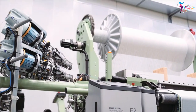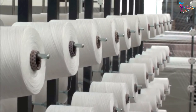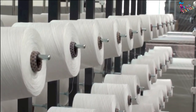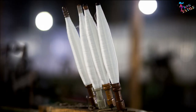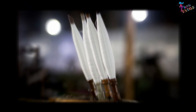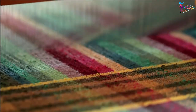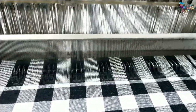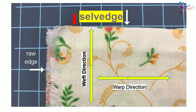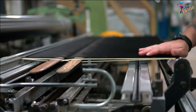Warp and weft yarns are prepared separately for fabric manufacturing. Normally, stronger yarns are used for warp compared to the weft yarns. If you take a fabric specimen, the fabric is stronger in the lengthwise direction compared to widthwise.